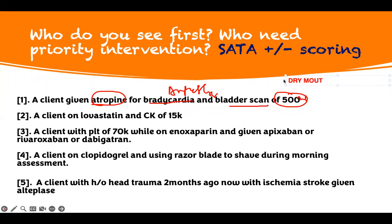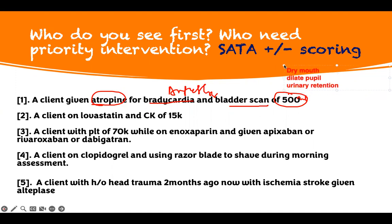Anticholinergics give you dry mouth. And they dilate your urethra, so they worsen your glaucoma. They cause urinary retention and they cause constipation.